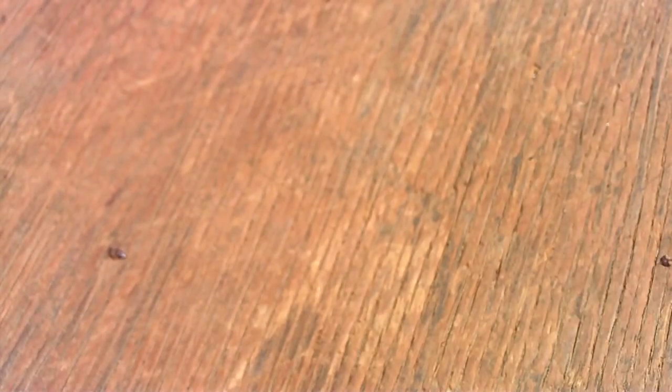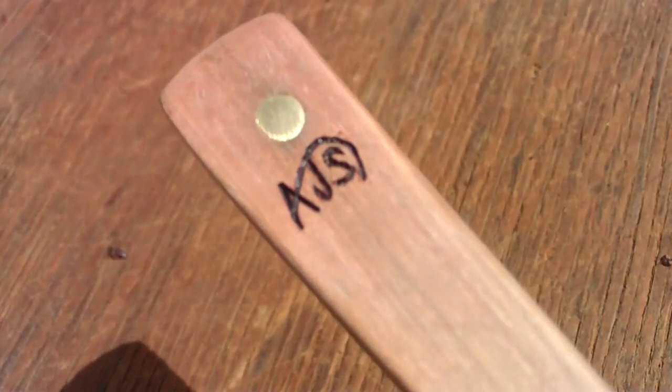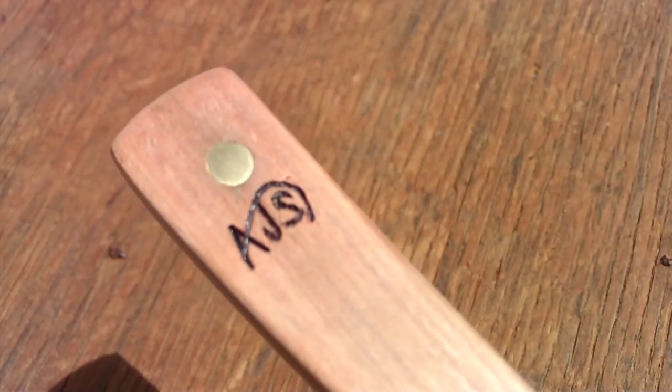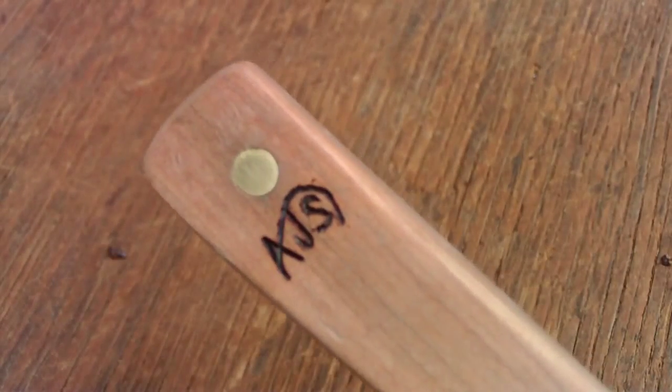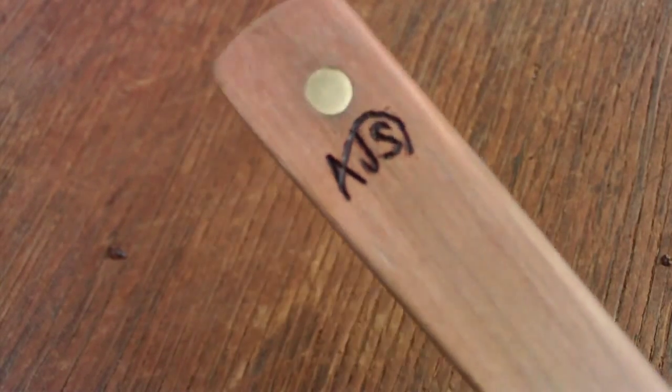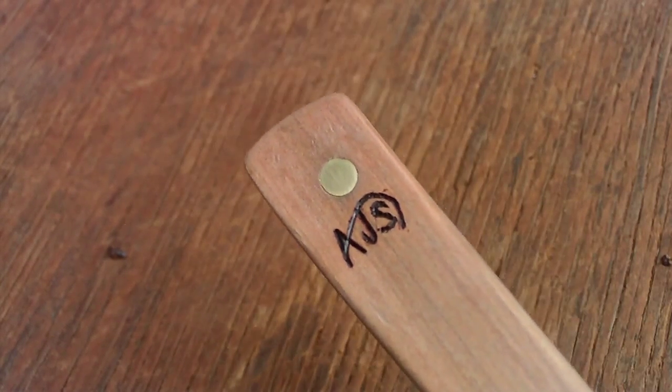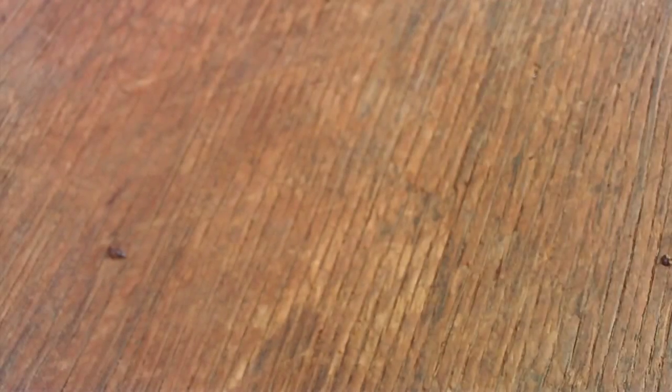Alright, now that I've got the handle shaped and everything, I now have my initials burned onto the back. And after I burned my initials, I went ahead and re-sanded it. Got it down to a fine sanding again because after you burn it, it can be a little bit jagged.